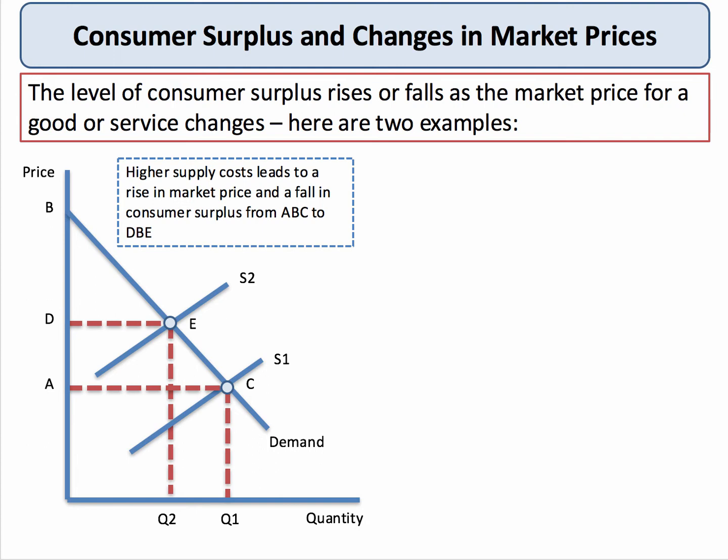The first one, we see an inward shift of supply from S1 to S2, caused, for example, by an increase in supply costs. That causes the market equilibrium price to rise from A to D, and the quantity consumed in equilibrium to fall from Q1 to Q2. Originally, at the low price A, consumer surplus was A, B, C — the area underneath the demand curve and above the price.